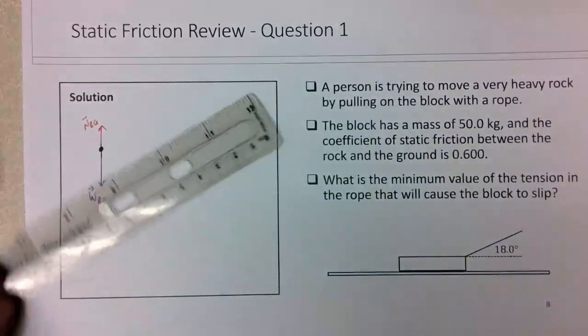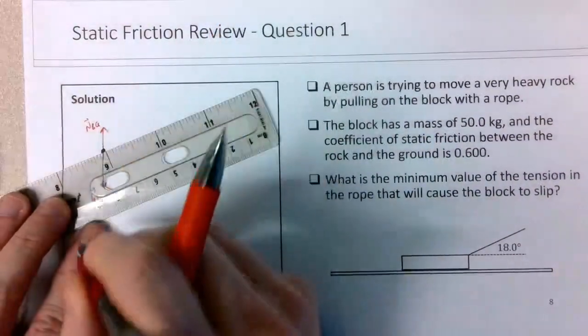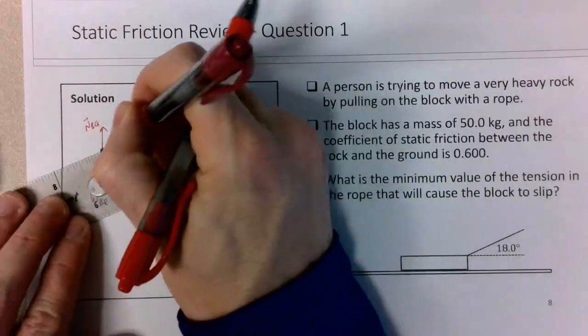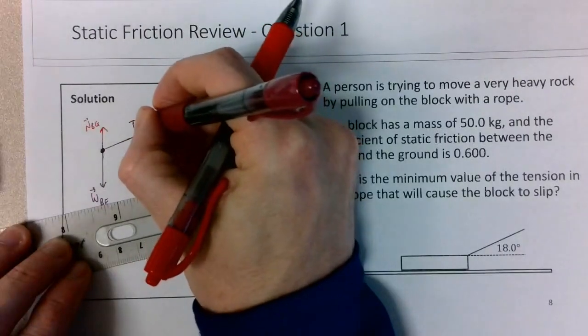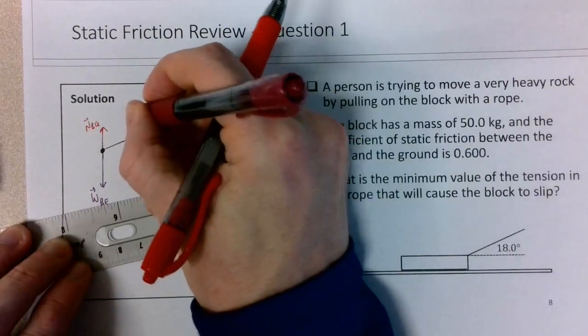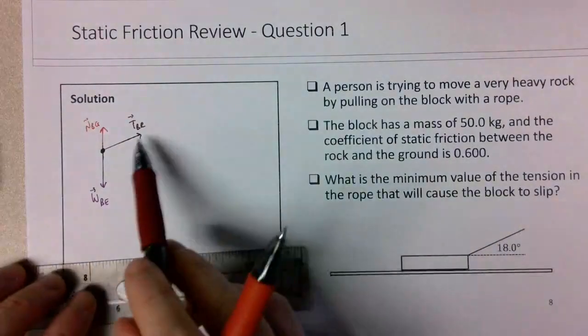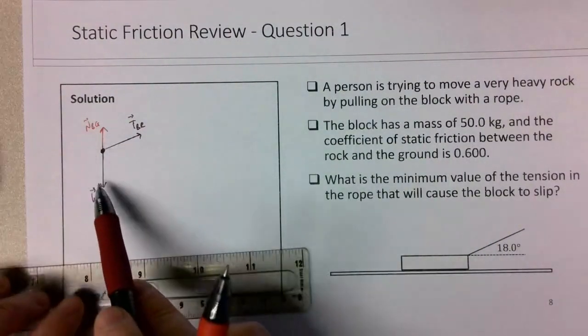Then we have this tension force back to the right. Tension force on the block by the rope. And so its y-component plus the normal would balance out the weight.